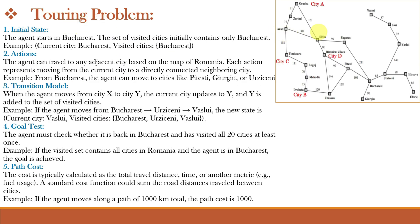The next example is the touring problem. The touring problem is about visiting multiple cities at least once while finding the best travel route. The goal is to cover all locations efficiently, often minimizing travel cost or distance. The agent must check whether it is back in the initial city and has visited all cities at least once. The solution is used in real world scenarios such as delivery services, road trips, and tour planning. The challenge is to decide the best order to visit the cities without unnecessary travel. A famous example of this touring problem is the Traveling Salesman Problem, or TSP, where a salesperson must visit every city exactly once and return home.